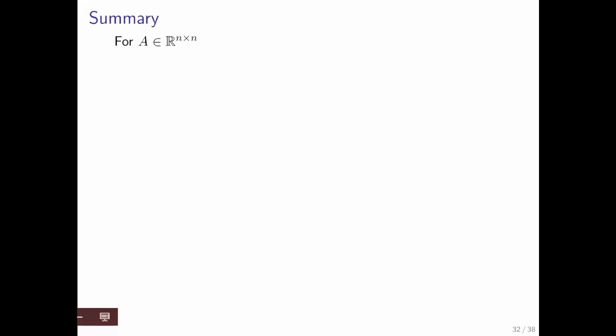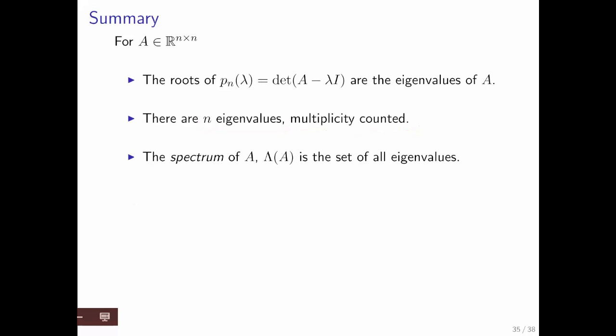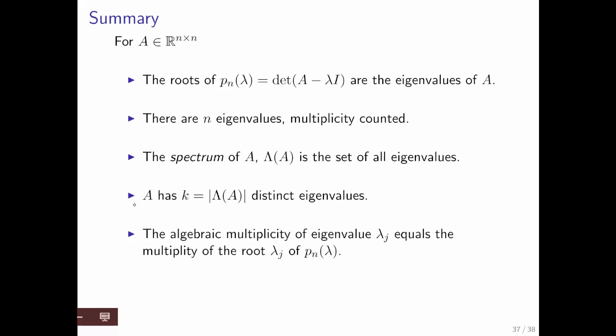So in summary, for an n-by-n matrix, what do we know? We know that the roots of the characteristic polynomial, which is the determinant of A minus lambda I, are the eigenvalues of A. We know that there are n eigenvalues if you count multiplicity. We're going to call the set of all eigenvalues the spectrum of A, and we're going to denote it with this notation right here, capital lambda of A. Notice that that set has k elements, namely the distinct eigenvalues. The algebraic multiplicity of the eigenvalue lambda j is equal to the multiplicity of the root of the characteristic polynomial. And eigenvalues can be complex-valued. If so, they come in complex pairs if matrix A has real-valued elements.